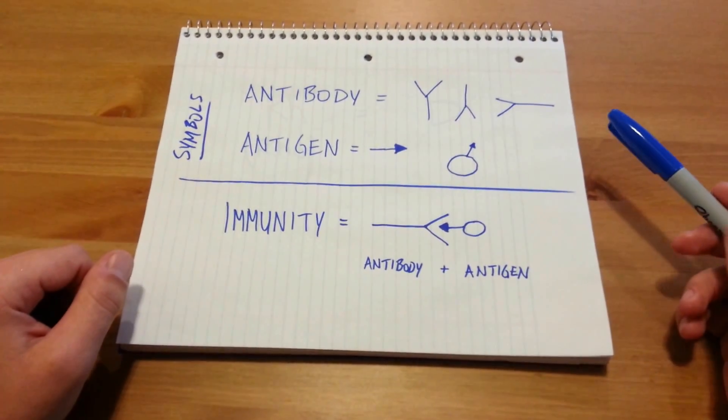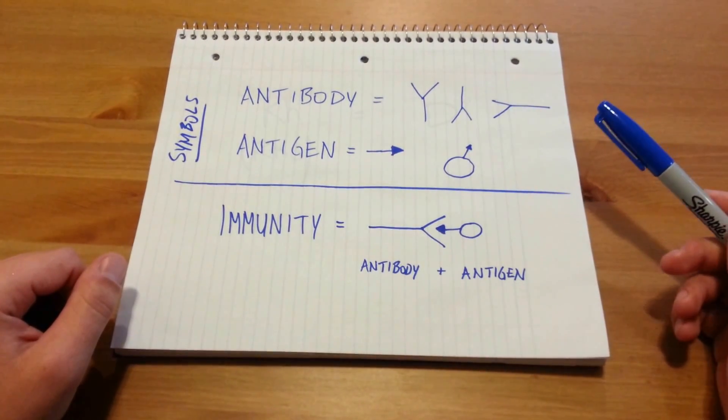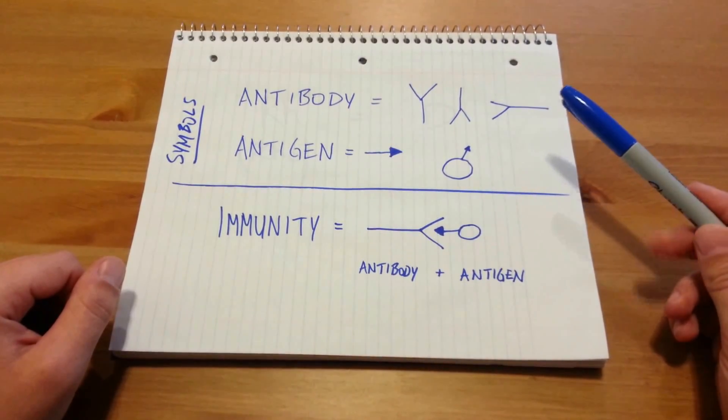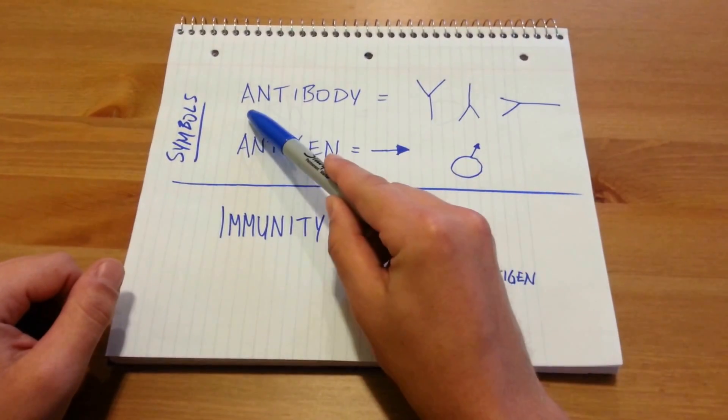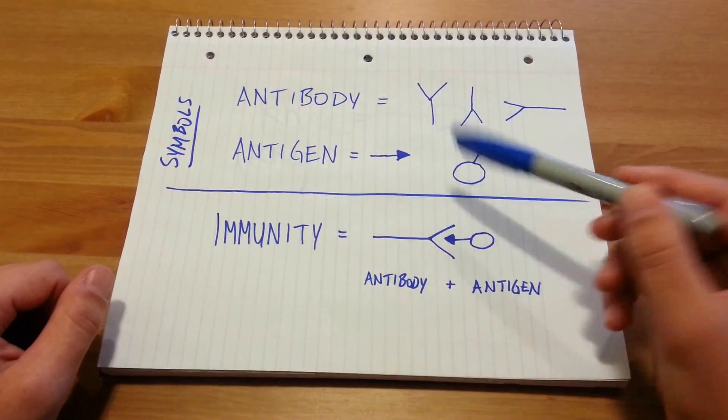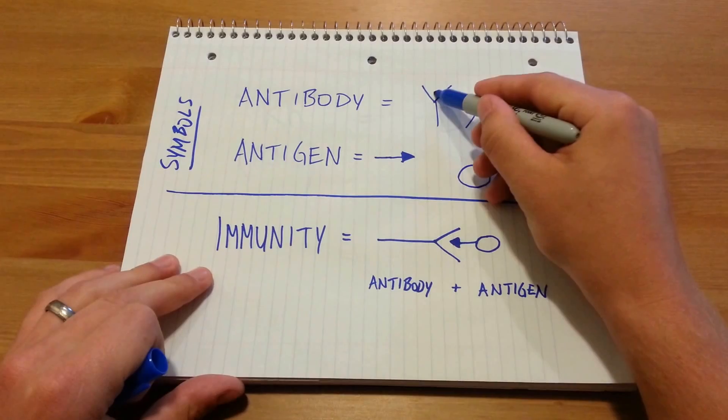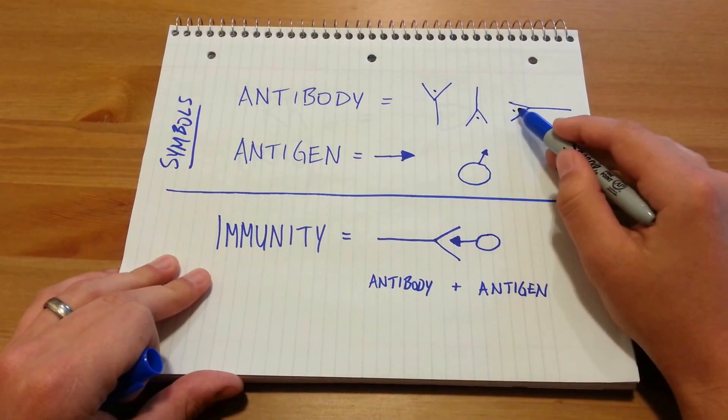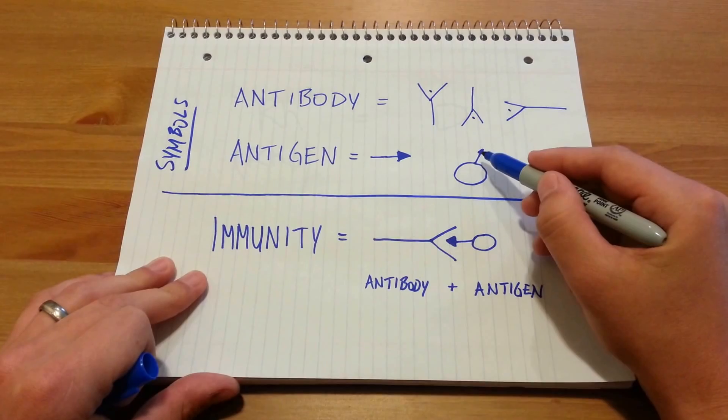We're going to begin with a basic, brief overview of immunology and an introduction to the symbols I'm going to be using in this video. The symbols I'm going to be using are for antibody, this Y shape, where the binding site is located here. You'll know what I mean by binding site in a second because the binding site is where it binds to antigen.